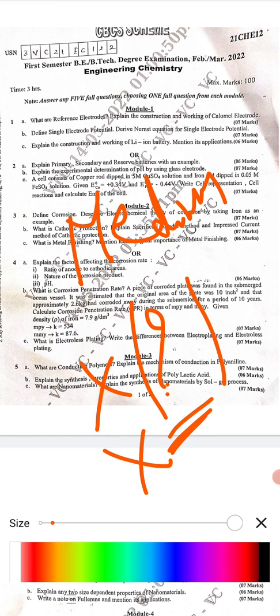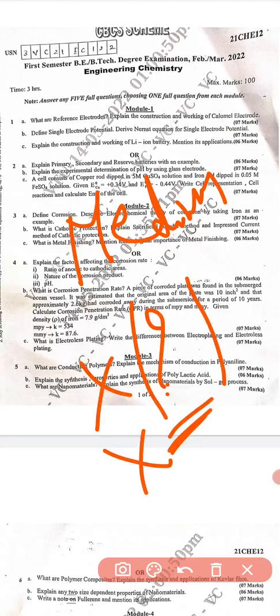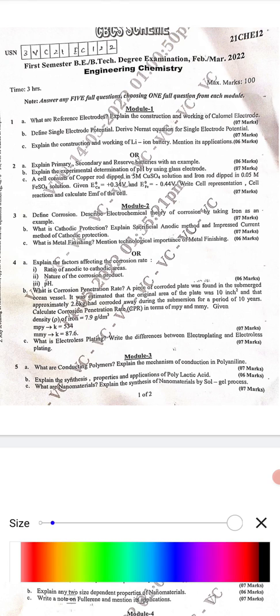Students who have studied can definitely answer all five questions without hesitation, so for them it's looking easy. But I'm asking for the average students and below average students how the chemistry question paper was. Please put it in the comment box.